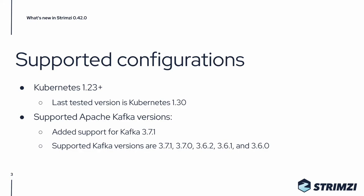This version adds support for Apache Kafka 3.7.1. That means that all the supported Kafka versions in this release are 3.7.1, 3.7.0, 3.6.2, 3.6.1, and 3.6.0.